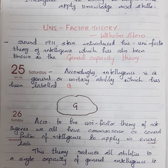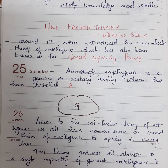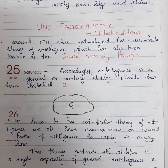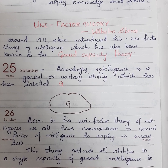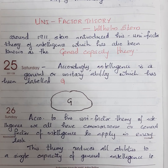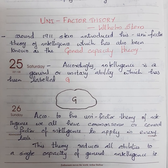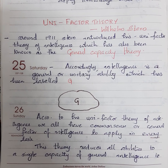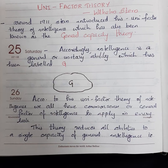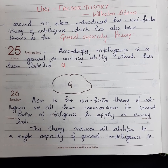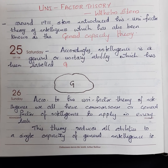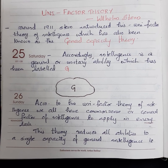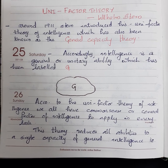According to the monarchic view, intelligence is regarded as an adaptability which enables a creature to adjust itself to the changing environment. This is a popular view which regards intelligence as a unitary or monarchic faculty that determines the level of a person's achievement in any intellectual enterprise they may undertake. This unifactor theory says that we all have a common or general factor of intelligence that we apply to every task.